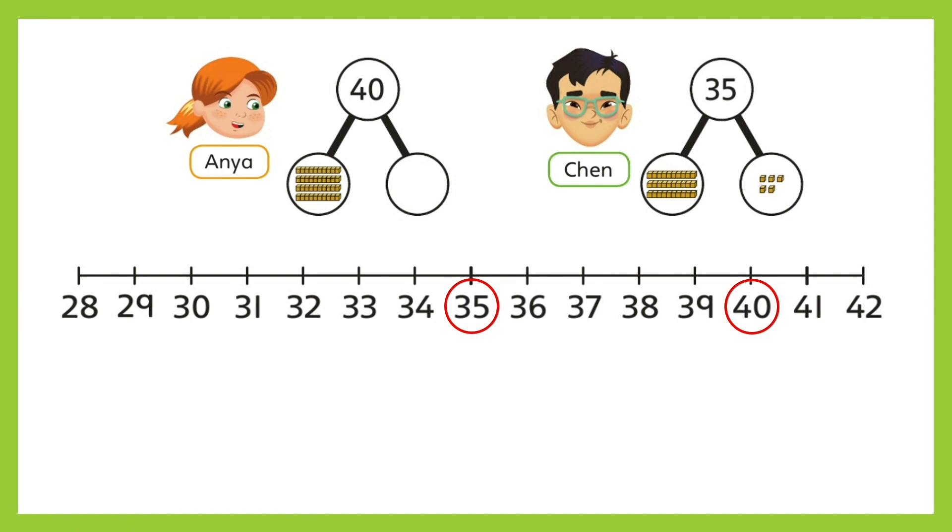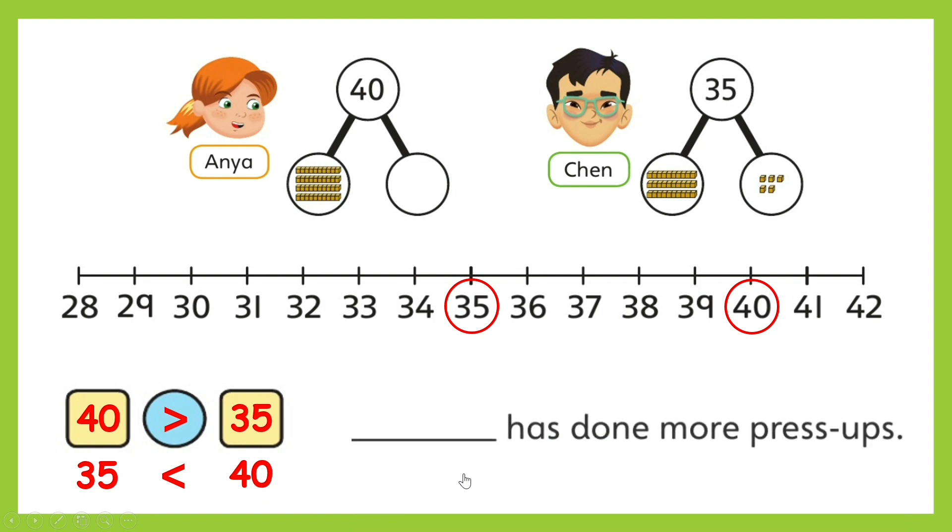Let's see if you got this correctly. Since Anya's number has more tens than Chen's number, then 40 is greater than 35. Were you correct? But if you wrote this the other way, 35 is less than 40, then you are also correct. Because these two number sentences both show that 40 is the bigger number. So, who has done more press-ups? Excellent! Anya has done more press-ups.